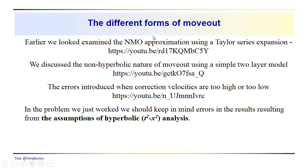So the different forms of moveout that we've looked at - we've talked about the normal moveout approximation using a Taylor series expansion, this was presented on this video. We discussed the non-hyperbolic nature of moveout, and we saw some of that when we looked at the coefficient of determination, the R2 for the reflection events from interface 2 and 3. That's discussed in this video. And we also talked about the errors introduced when the correction velocities are too high or too low when we actually apply the delta T correction using our NMO velocities, if they're too high or too low.